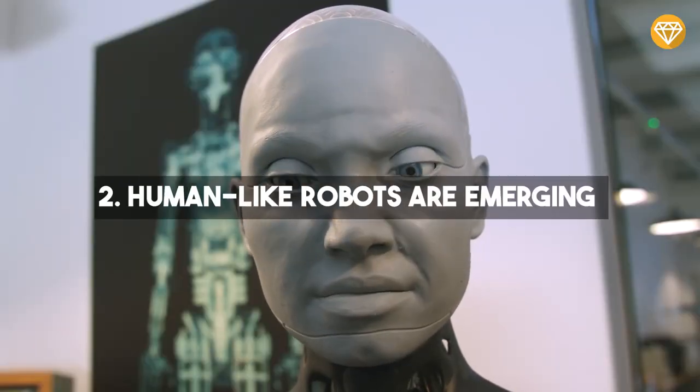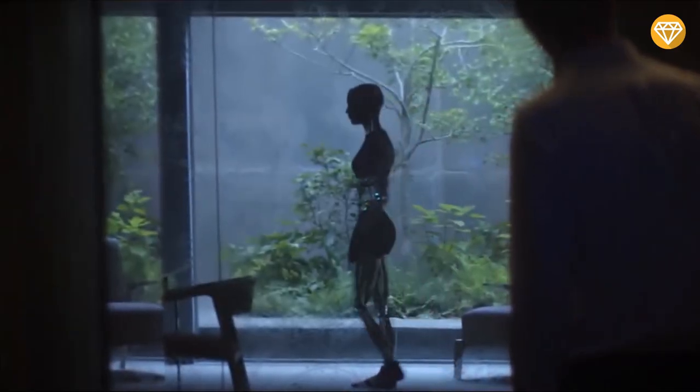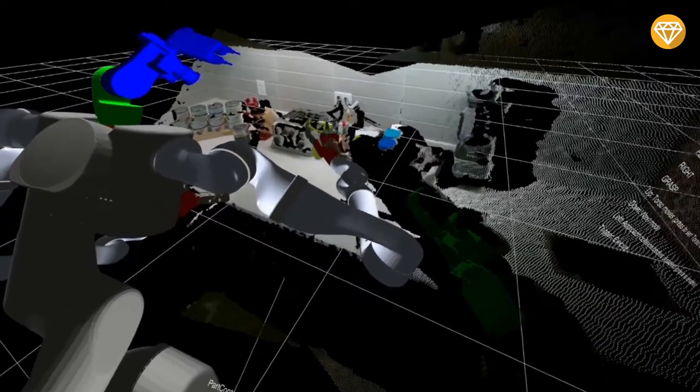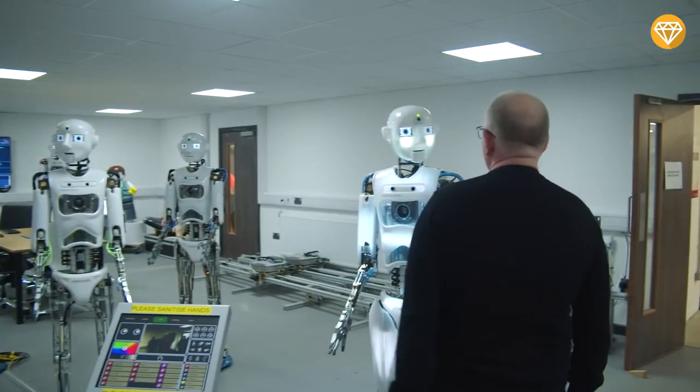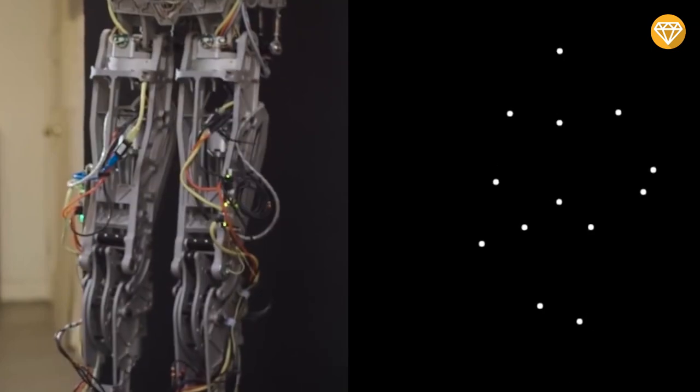Number 2. Human-like robots are emerging. In 2050, robots have the ability to master real-world environments and an increasingly diverse range of 3D objects. Although earlier robots were limited to fixed movements, this new generation has more dexterity and flexibility.